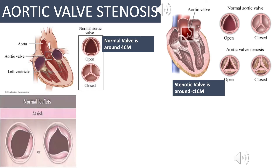A normal leaflet can either be bi-leaflet or tri-leaflet. Most people in the world have three leaves but it's still normal to have two. People with two leaves are at increased risk of having aortic valve stenosis because of more shear stress, leading to more oxygen free radicals causing fibrotic changes to occur in the valve.